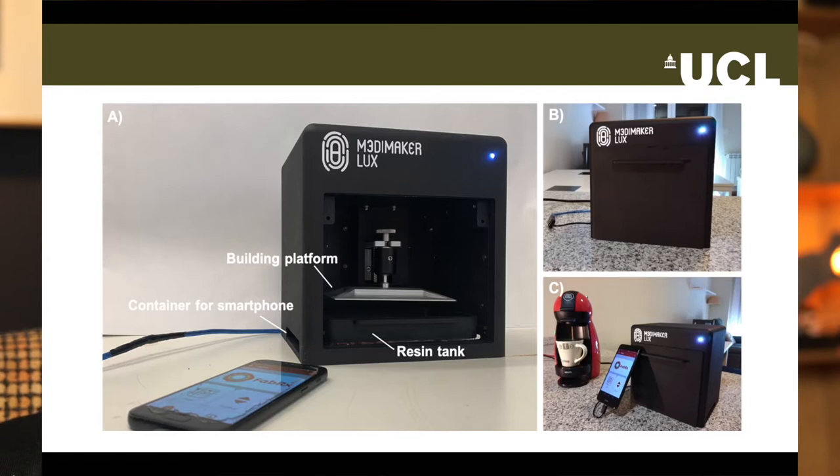We have done a lot with SLA printing, including printing a polypill containing six different drugs and printing hearing aids. We have also developed our own SLA printer that uses the light from a smartphone to cure the resin. It's called the Medimaker Luxe, and you can see it on the screen.